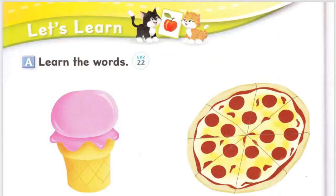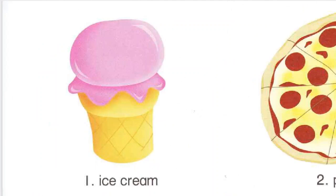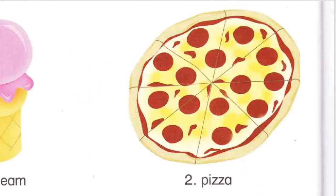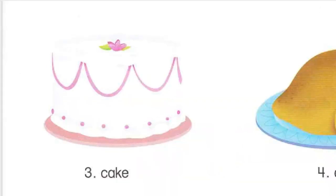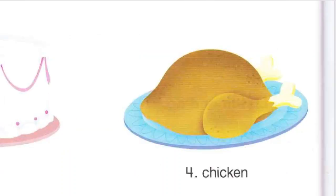Page 48, Let's Learn. A. Learn the words. Number 1. Ice cream. Number 2. Pizza. Number 3. Cake. Number 4. Chicken.